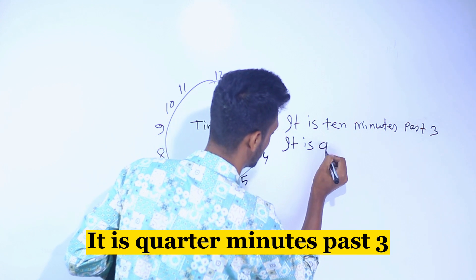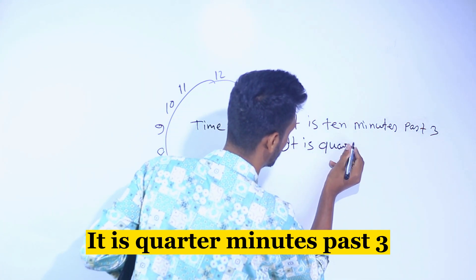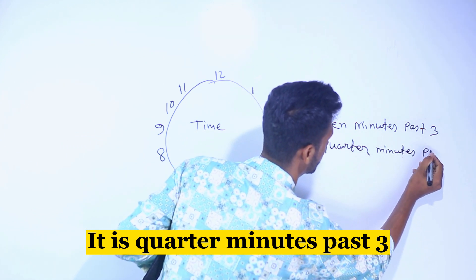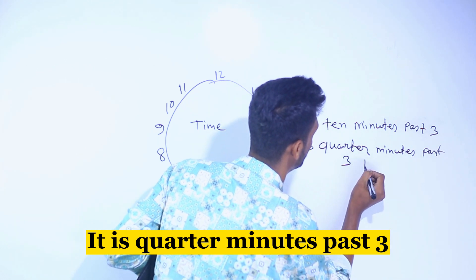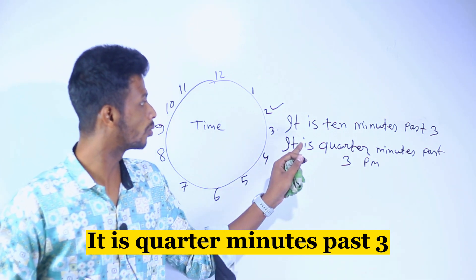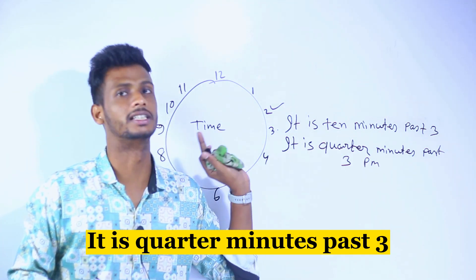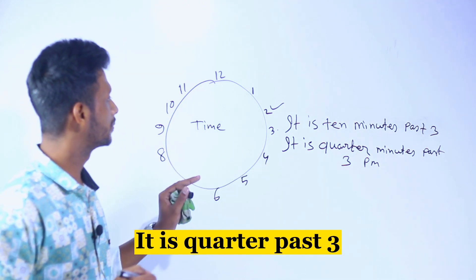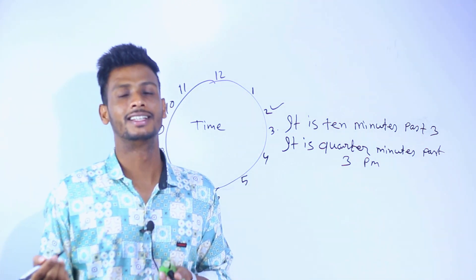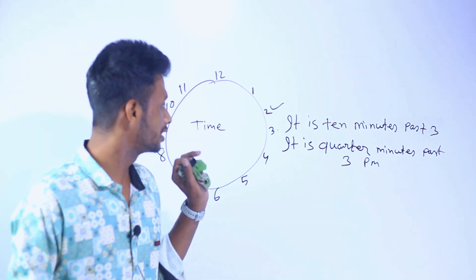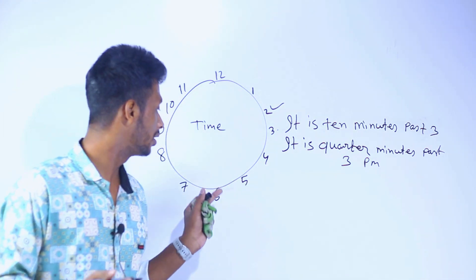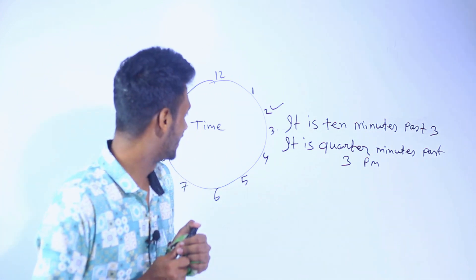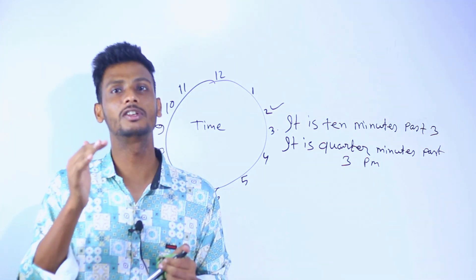It is quarter. It is quarter minutes past 3. It is quarter past 3. So we say it is 20 past 3, it is 20 minutes, 25 past 3. Then it is half past.